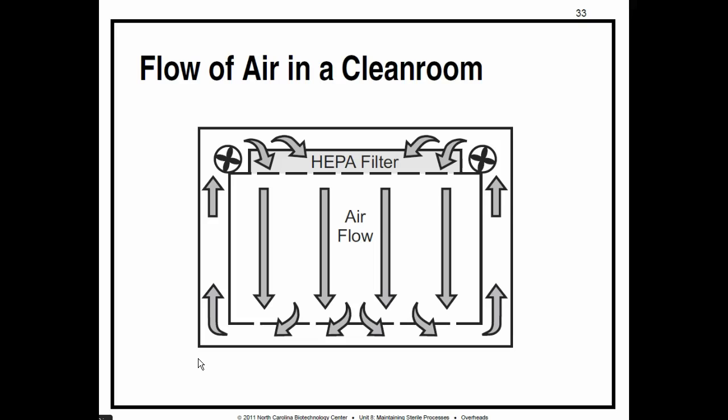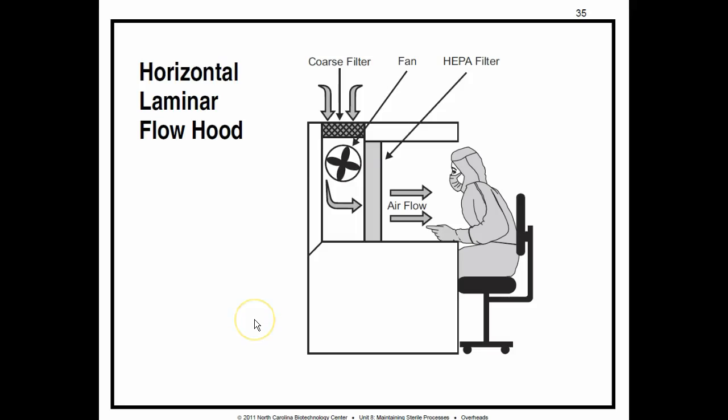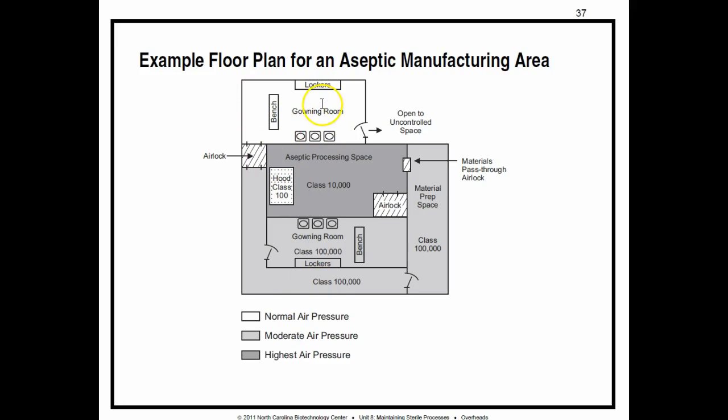Airflow is controlled in a clean room by air pressure, which is always going to be higher in the clean room than in surrounding rooms. The reason is that air pressure always pushes things from high to low, so you want to push particles out of a clean room, not into it. Aseptic areas are arranged so the cleanest rooms are at the core, where most of the air particles go, with less clean areas toward the outside.